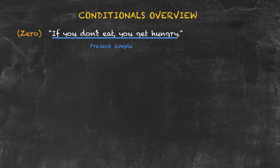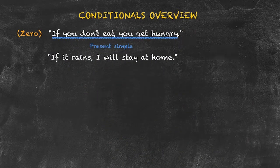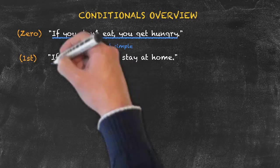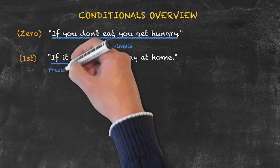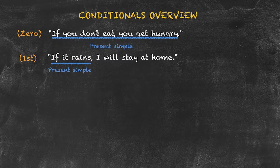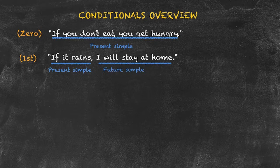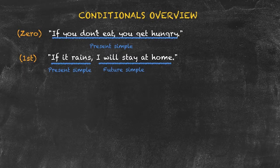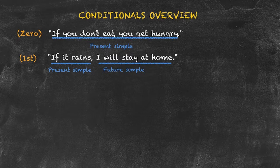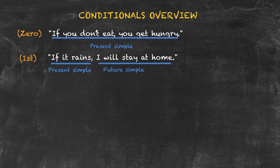Our second example sentence: 'if it rains, I will stay at home.' This is the first conditional. In the if clause we use the present tense, and in the other clause we use the future tense: 'if it rains' — present tense — 'I will stay at home' — future tense. The first conditional is used for real and possible situations. It's quite possible or likely that it could rain tomorrow, therefore we use the first conditional here.